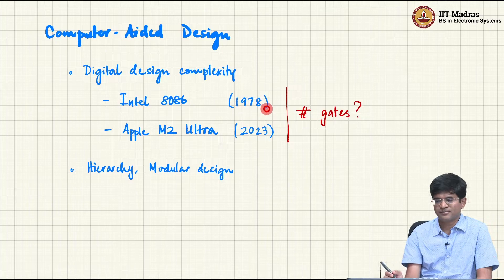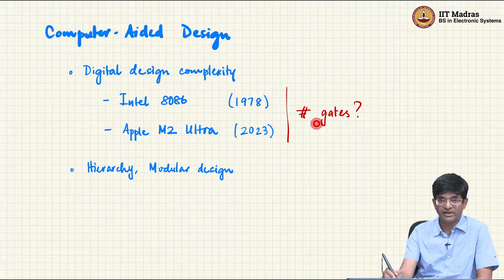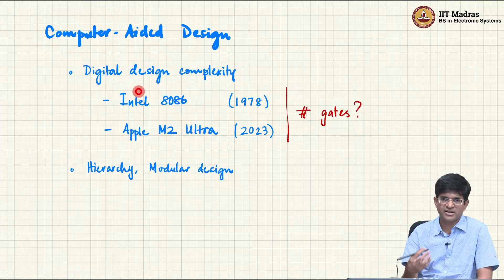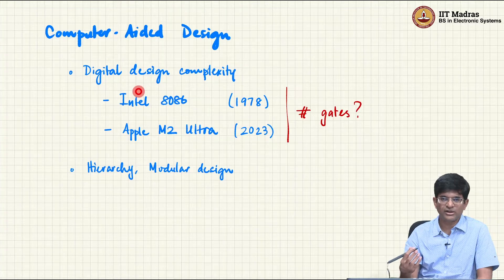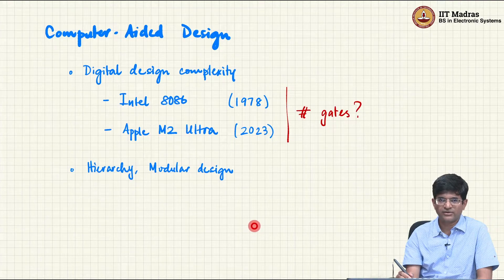It came out in 1978 and it is well worth looking up how many transistors it actually consisted of. It turns out that this entire processor — which had an ALU, registers, an interface with memory, and branching instructions, and could perform any kind of computation — fit within less than 30 thousand transistors, probably around 10 thousand gates or somewhere in that range.